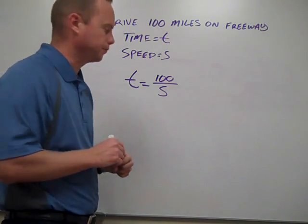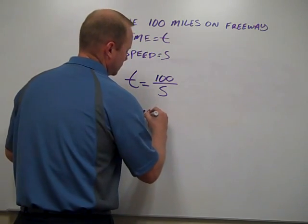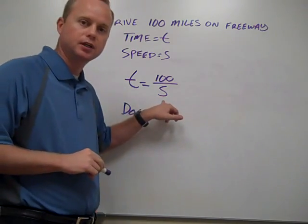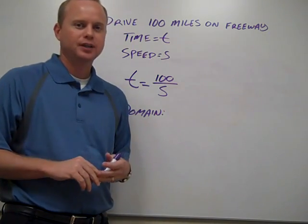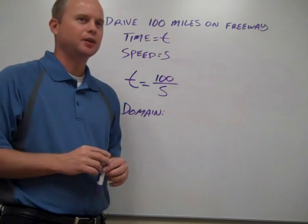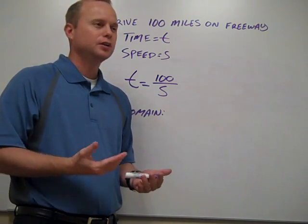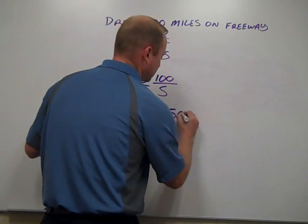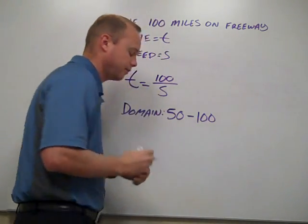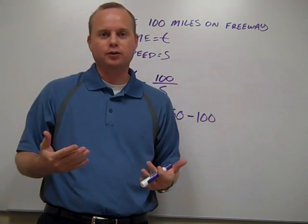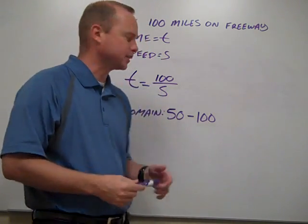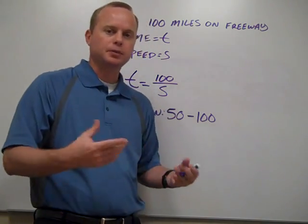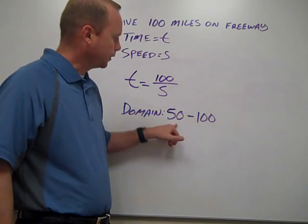Now we want to talk about the practical domain first. The domain is whatever's practical for the input we're using, and our input here is speed. What's practical for speed on a freeway? We're probably not going to go 2 miles an hour, and probably not much over 100. So the practical domain would be roughly 50 to 100 miles an hour — assuming normal driving speeds. Make sure you note your assumption when writing this.